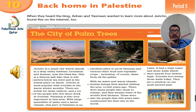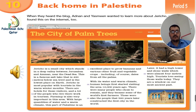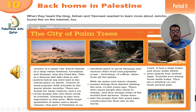Jericho is a small city which stands in a deep valley between Jerusalem and Amman, near the Dead Sea. This is a famous salt lake that is 400 meters below sea level and is the lowest place on earth. Jericho is most popular with tourists in the warm winter months. There are hotels for these visitors and a lot of the people who live there work in tourism. Farming is also very important in this area. With large quantities of water and a warm climate, this part of Palestine is an excellent place to grow bananas and various other fruit and vegetable crops, including, of course, dates from all the palms.